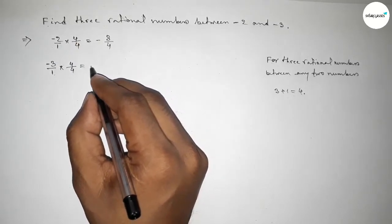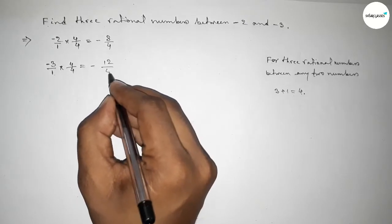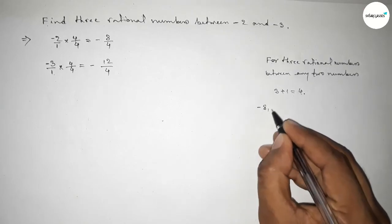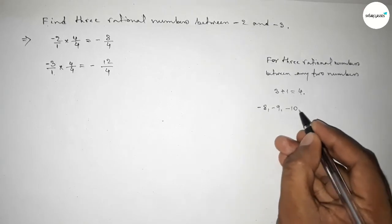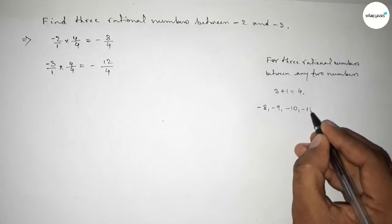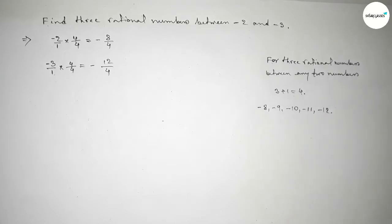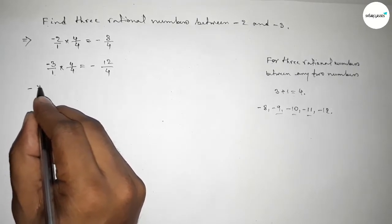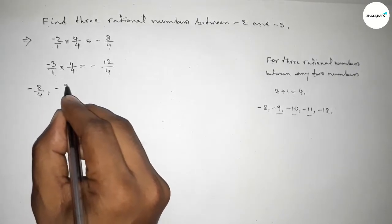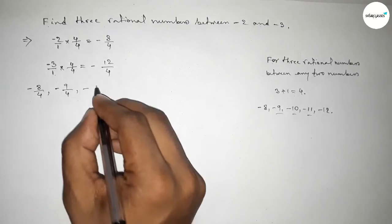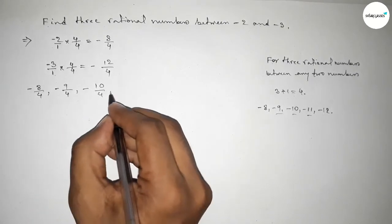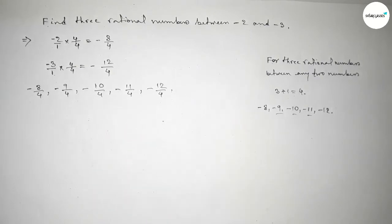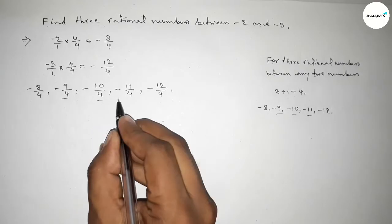Now between -8 and -12 we can get three negative integers. Forming the rational numbers: -8/4, -9/4, -10/4, -11/4, and -12/4. Among these, three are the required numbers.